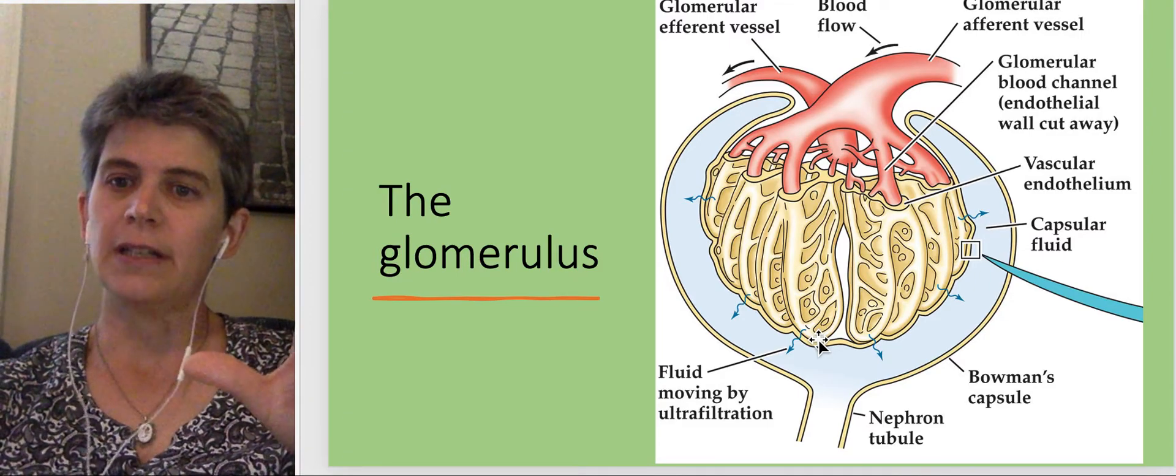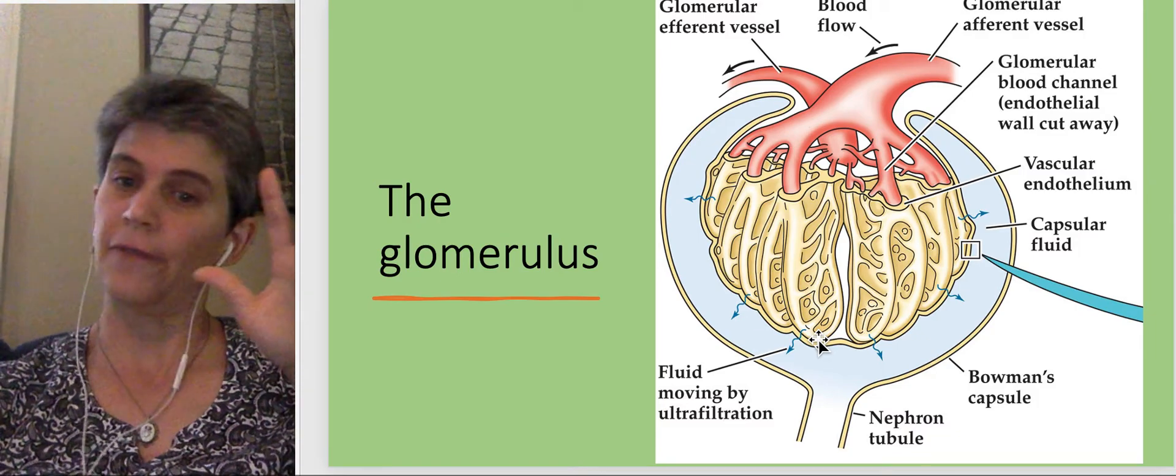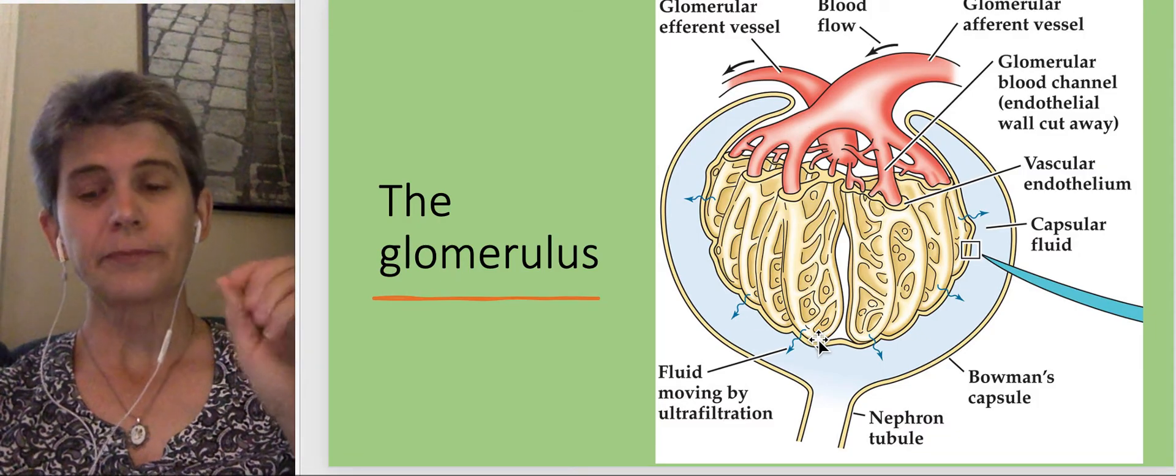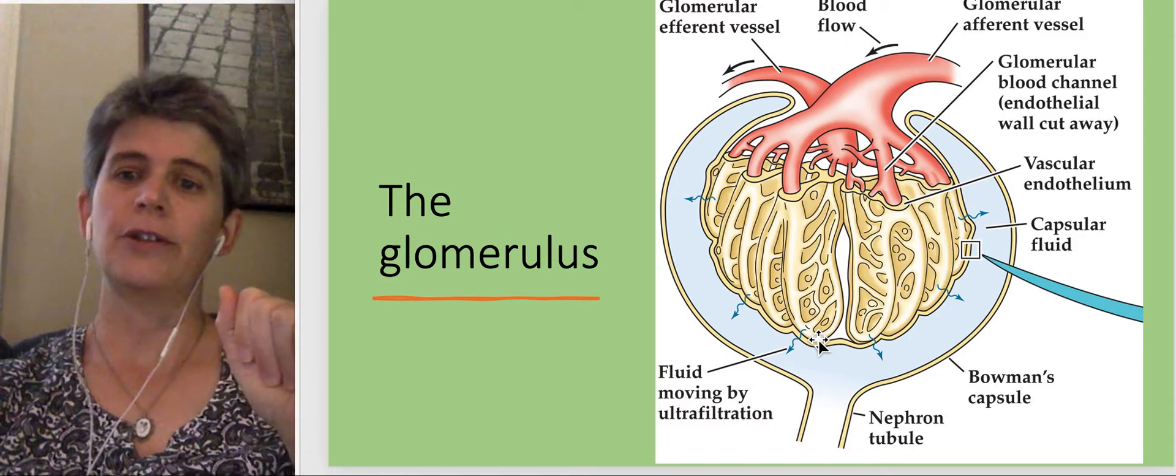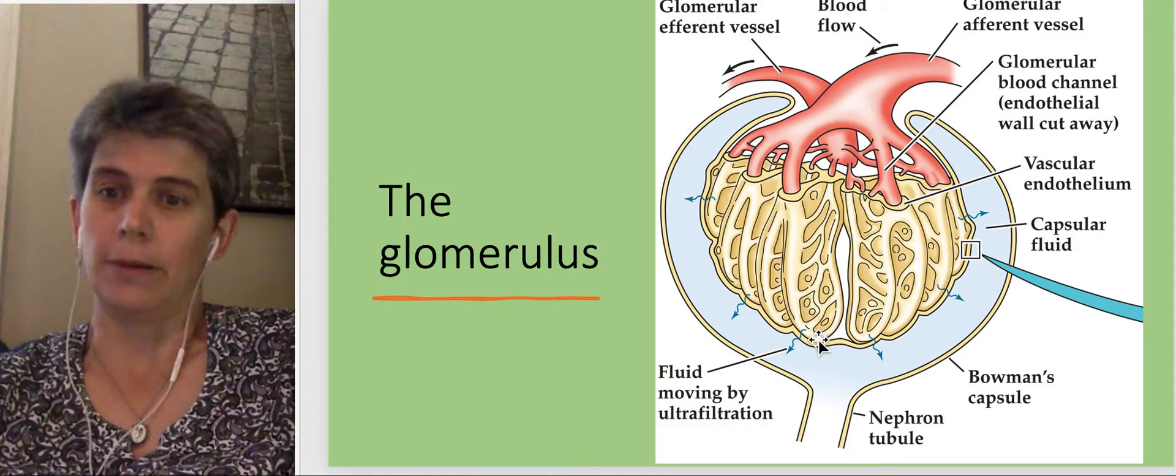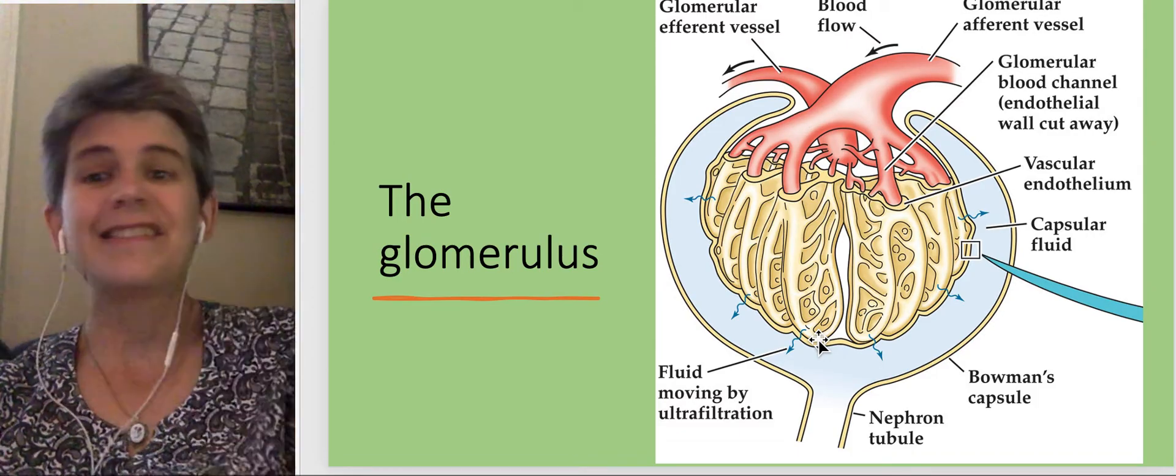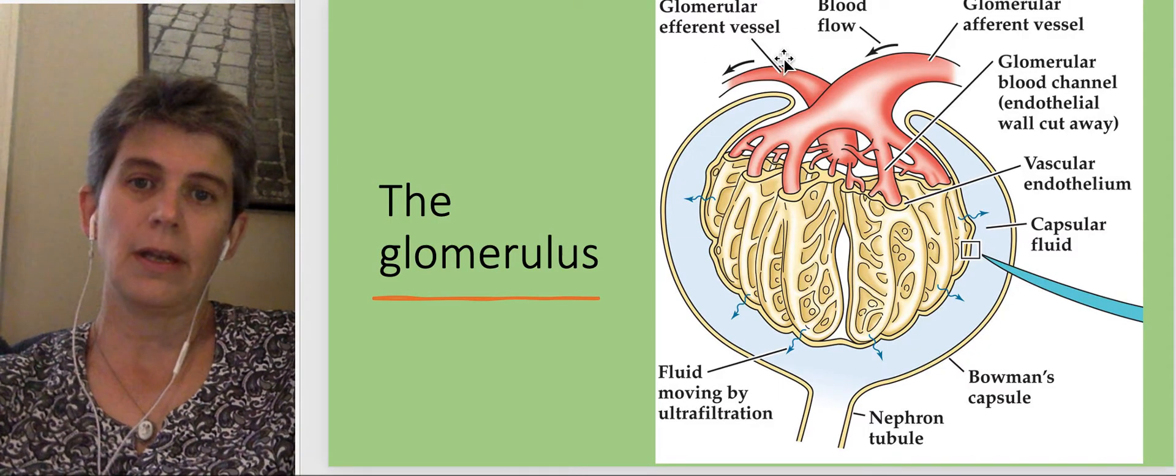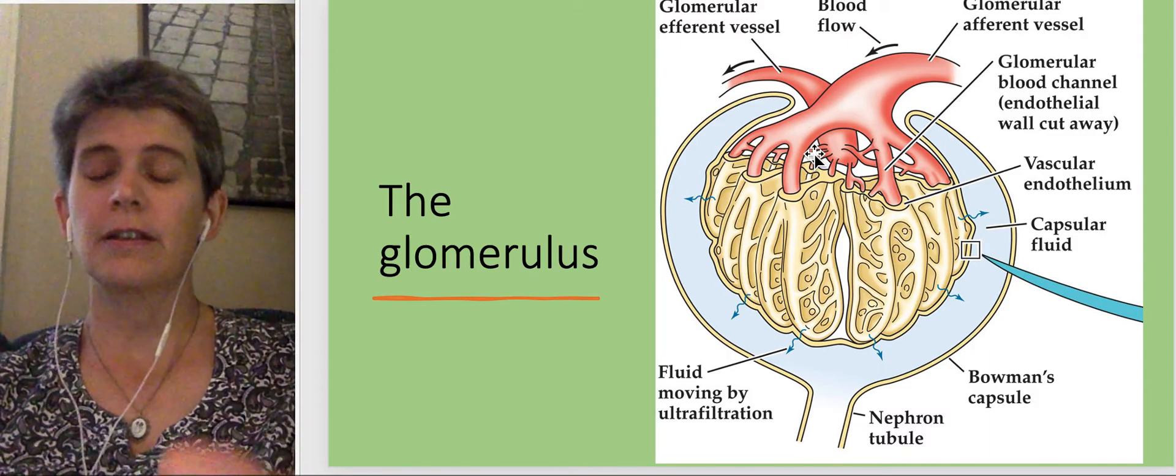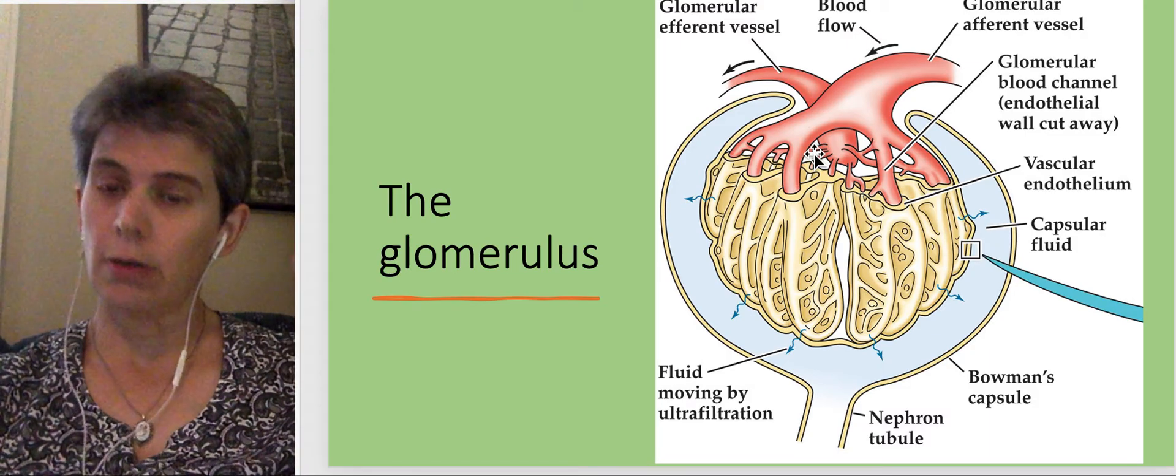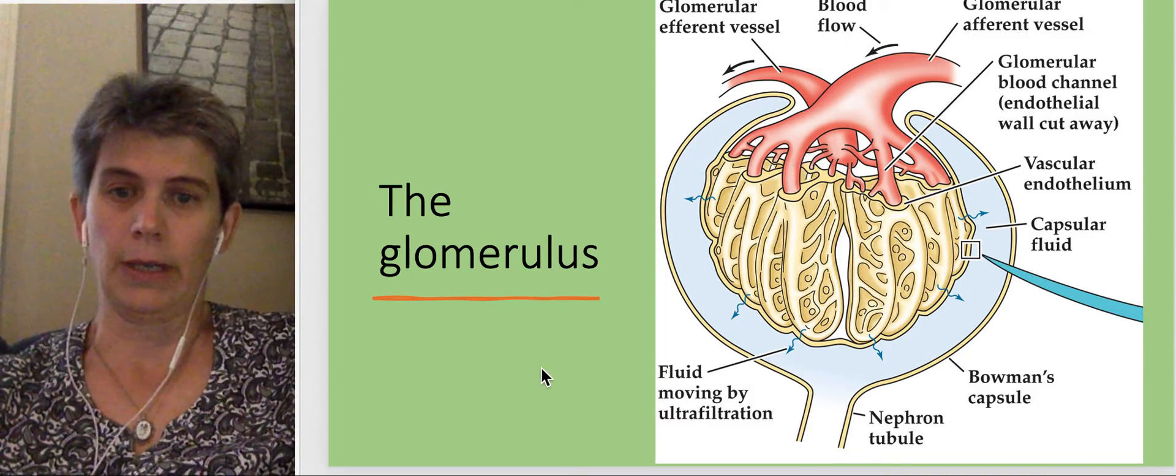So what happens here is that things that are small enough to fit through the fenestrations, the spaces within the capillary cells, are pushed into that tube. But large items, like proteins in the blood and red blood cells, stay in the blood and exit the glomerulus at this efferent vessel. So what has gone into the filtrate? Water and solutes, any small organic or inorganic solute.